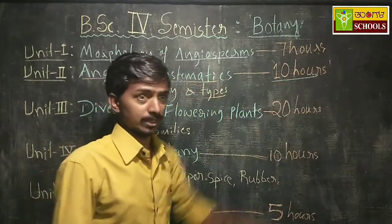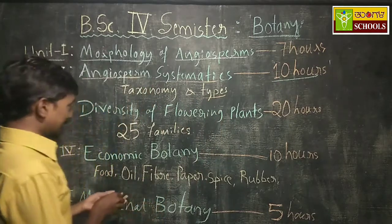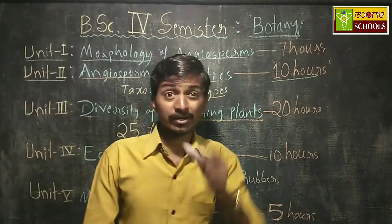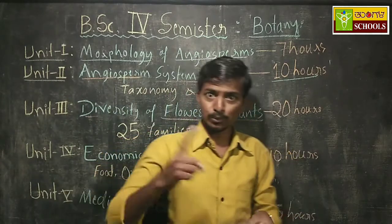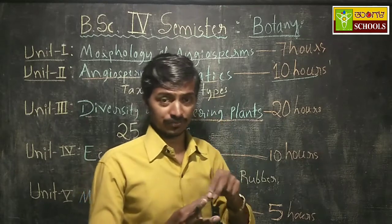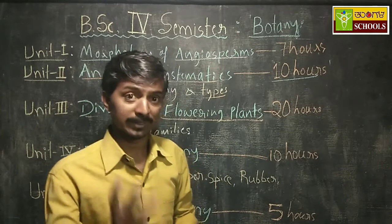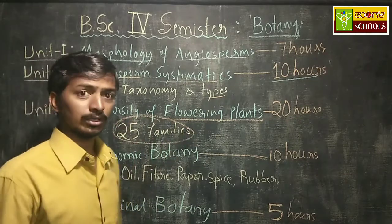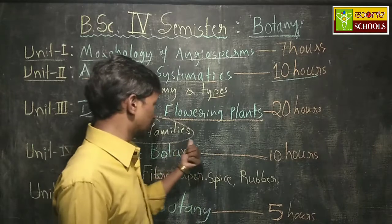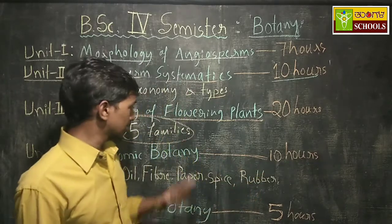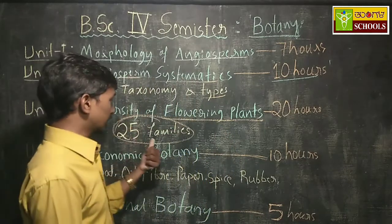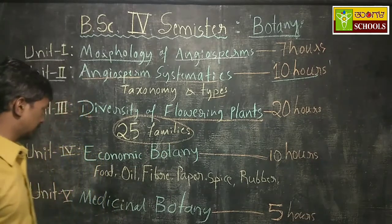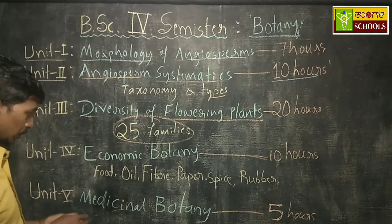Coming to the third unit — diversity of flowering plants. Here we study different families. In PUC we studied only three families: Fabaceae, Solanaceae, and one more. But here we will be studying about 25 different families — around 20 to 22 families of dicots and three to four families of monocots — totaling about 25 families of angiosperms in this unit.